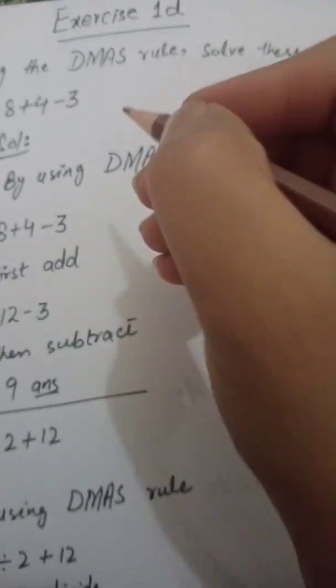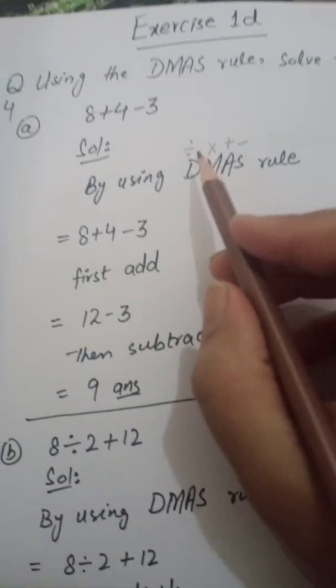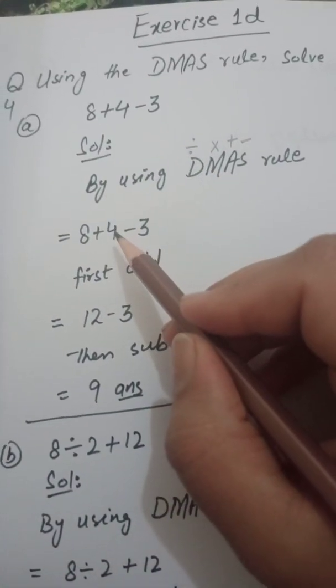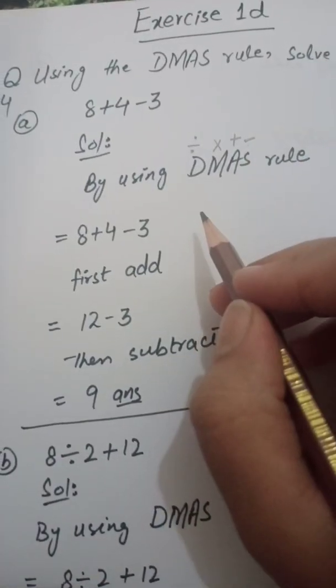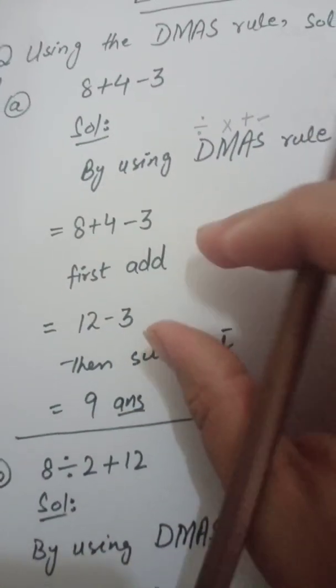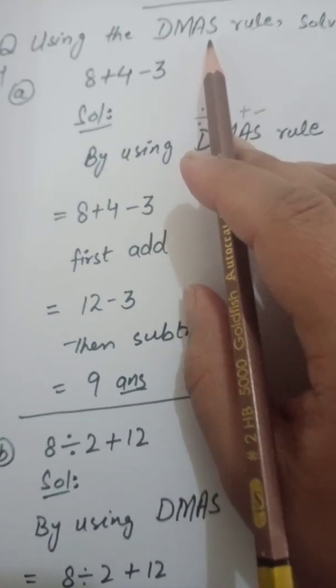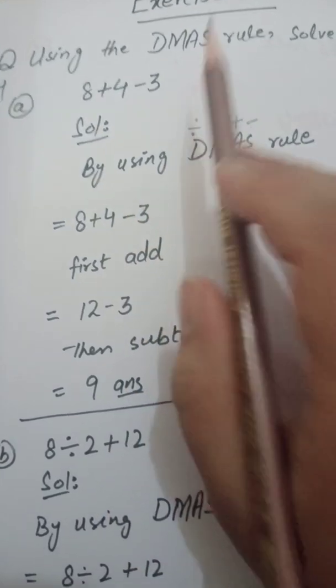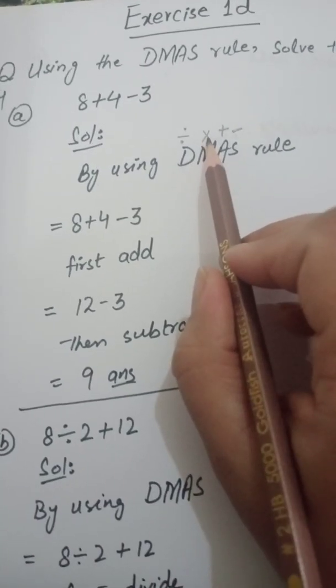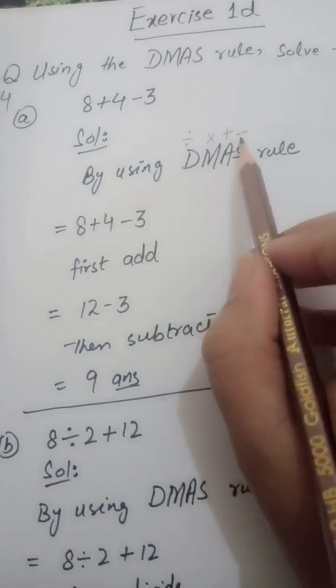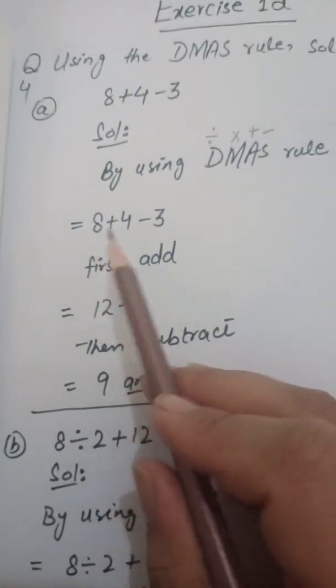Now DMAS, what does it tell us? See, first division, then multiplication, then plus, and last subtraction. Now see, neither in this question division, the divide operation is there, nor the multiply operation is there. We only have plus and minus. Okay, now how do you solve this question according to DMAS? Not according to the rule 1 you read in Countdown 4, that we will just solve from left. Here DMAS is telling us, divide is there, solve it first, it's not there, then multiplication is there, then do it. If that's also not there, plus is there, then do plus, and then do minus. So see, here first plus is there, so first we will add 8 plus 4.